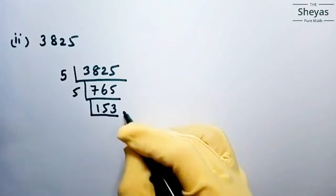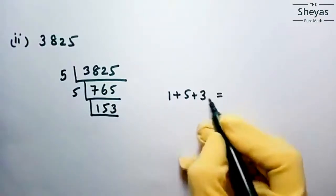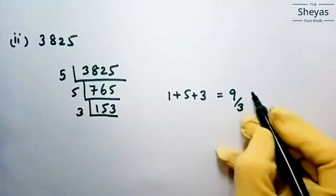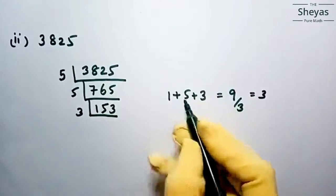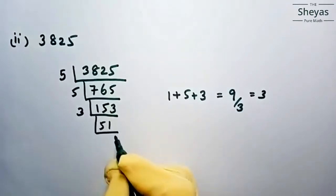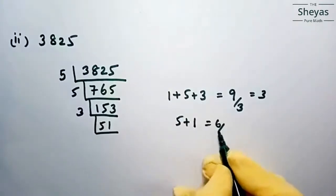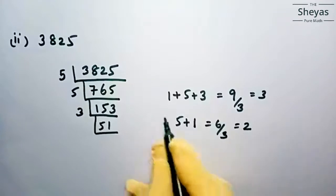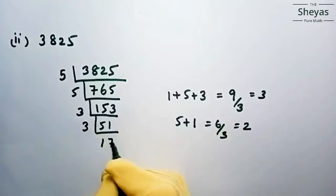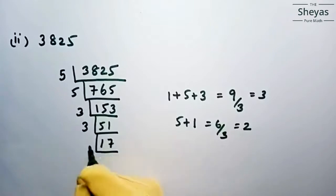Check divisibility of 153 by 3: 1 plus 5 plus 3 equals 9, which is divisible by 3. So write down 3. Dividing 153 by 3 gives 51. Again check 51: 5 plus 1 equals 6, divisible by 3. Dividing 51 by 3 gives 17. Now 17 is a prime number — it has no other factors — so write down 17 as it is.